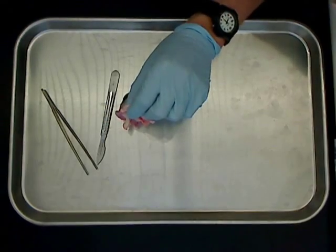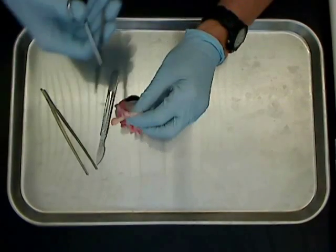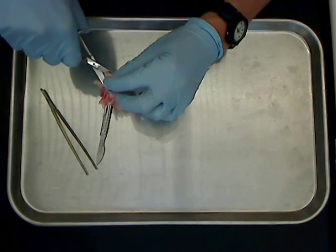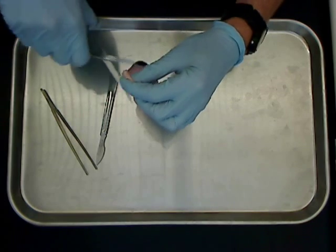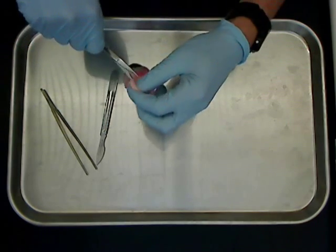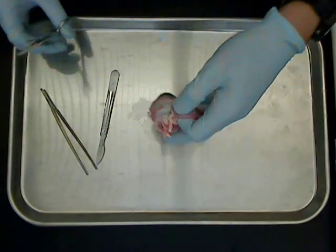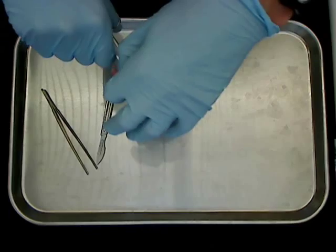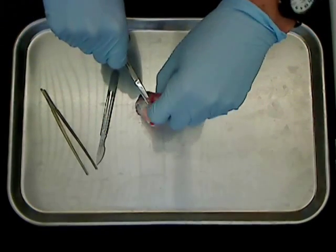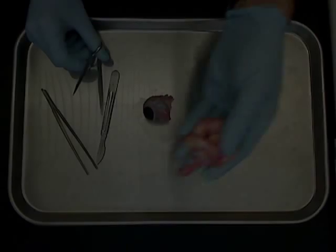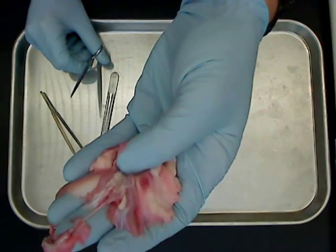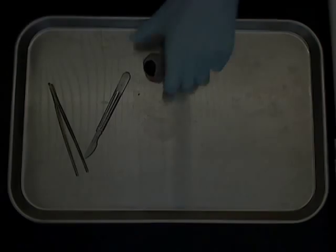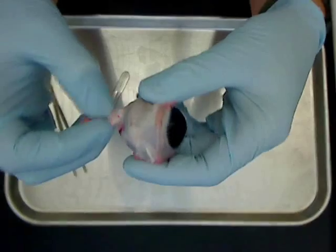Let's get the scissors. I think this may be the best method. So there's lots of fat, connective tissue, and muscle that surrounds the eye.